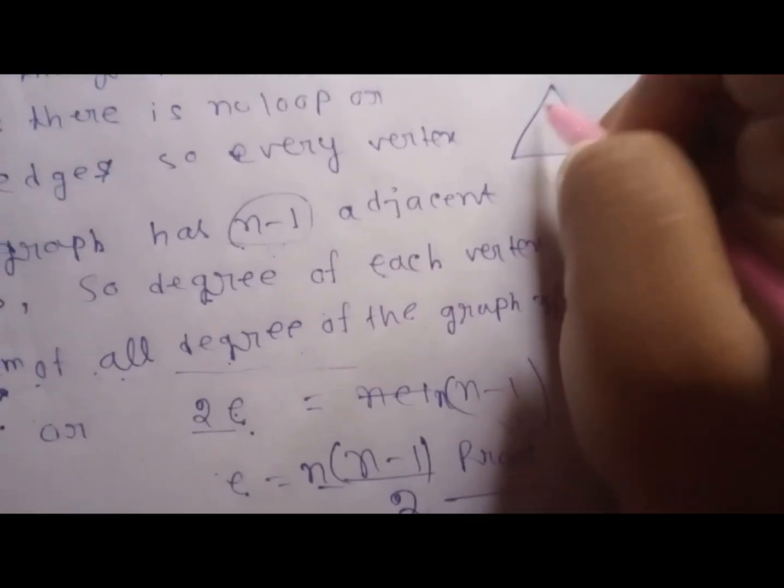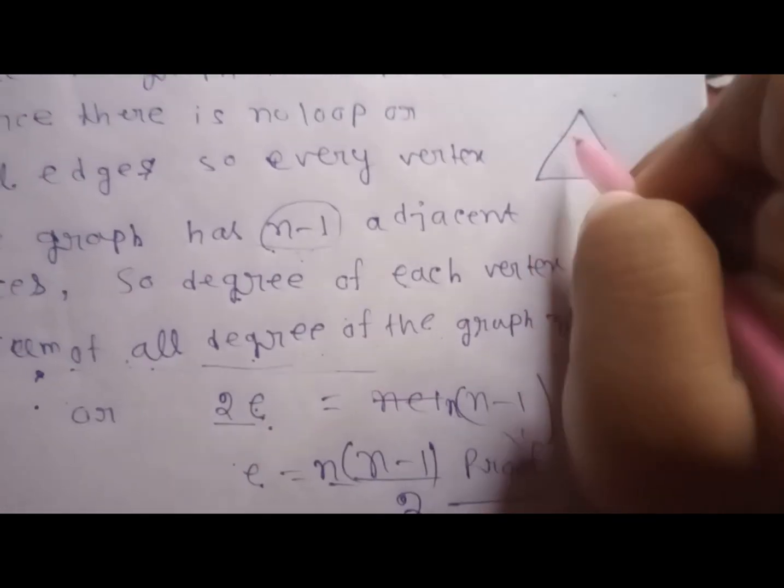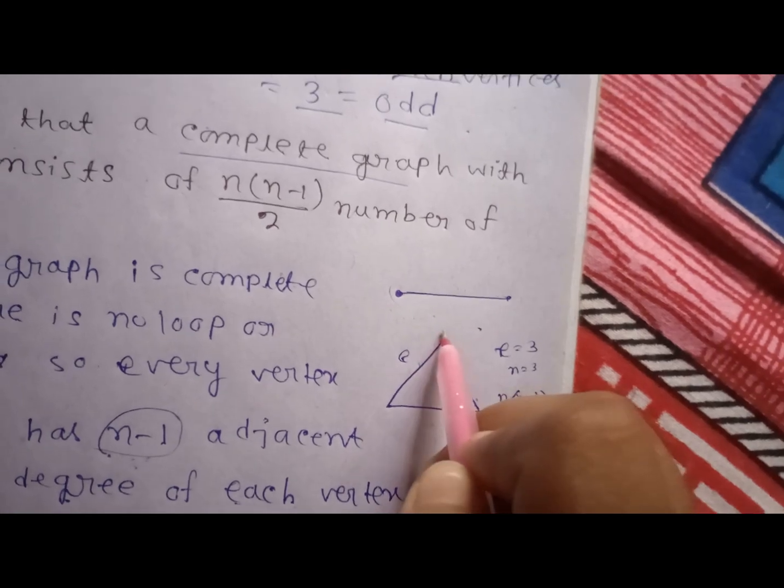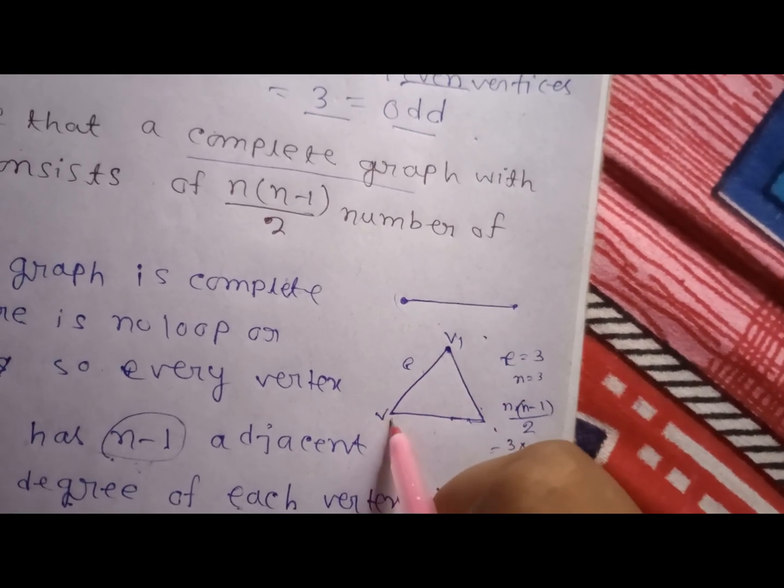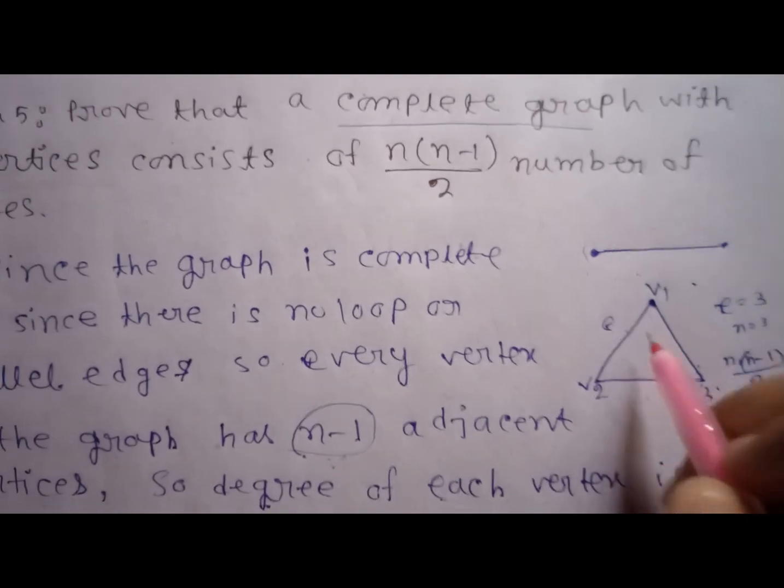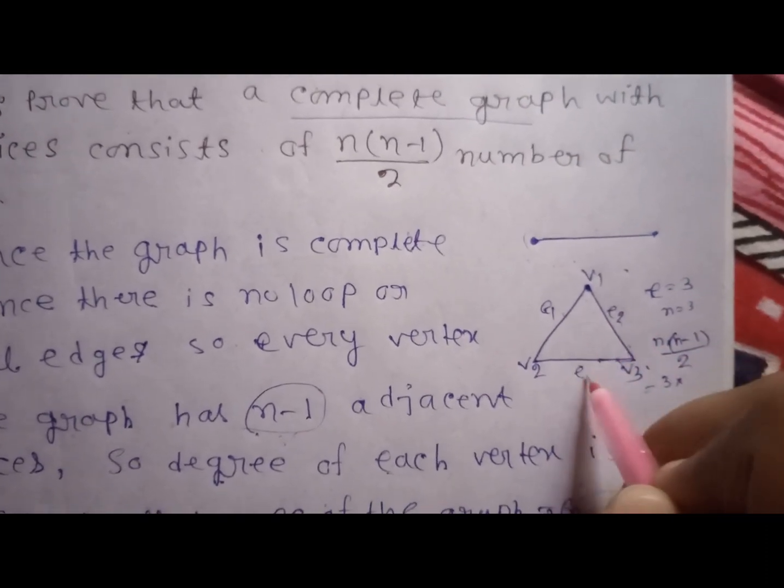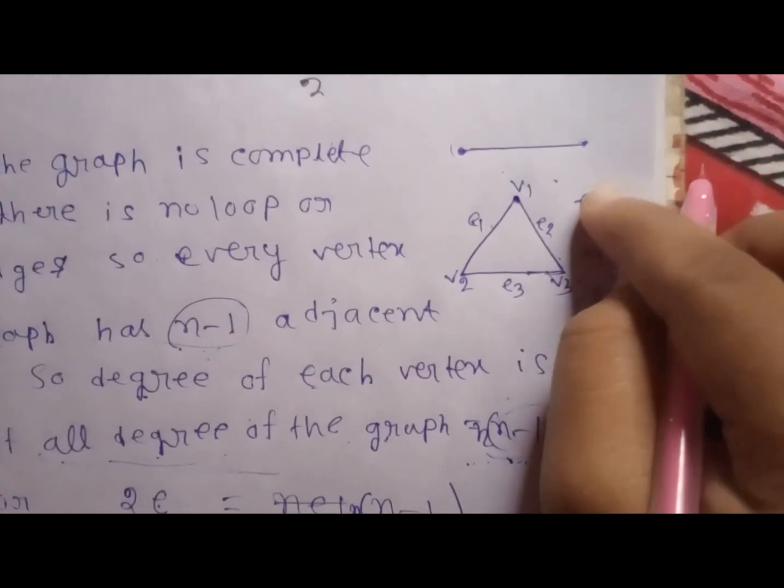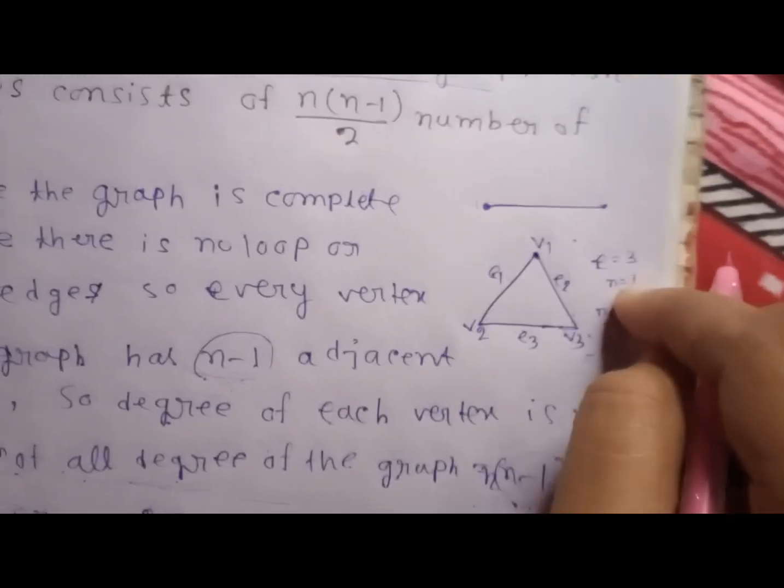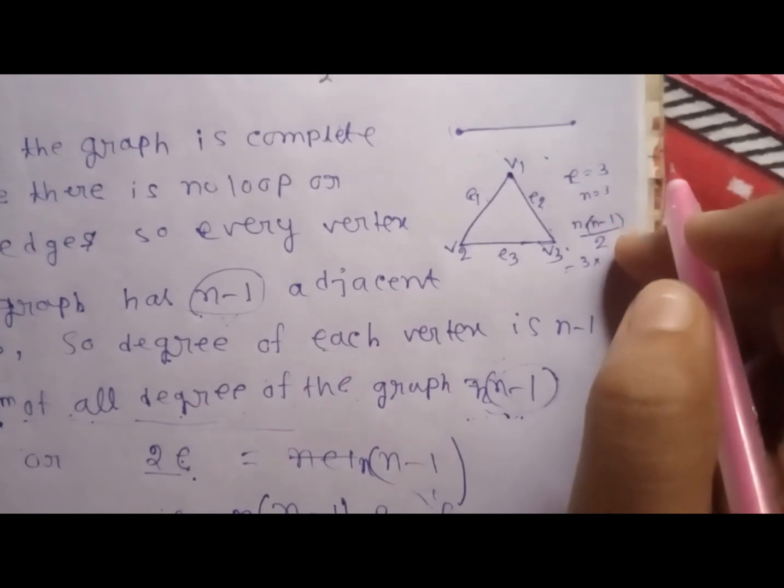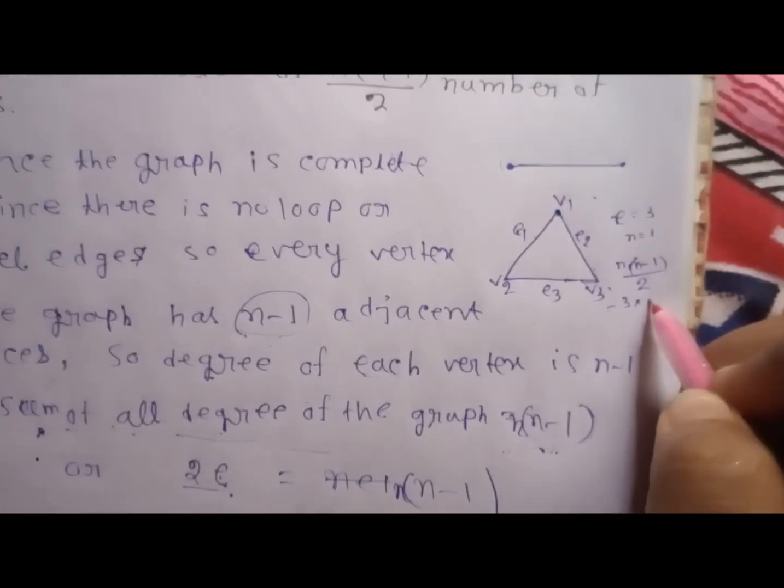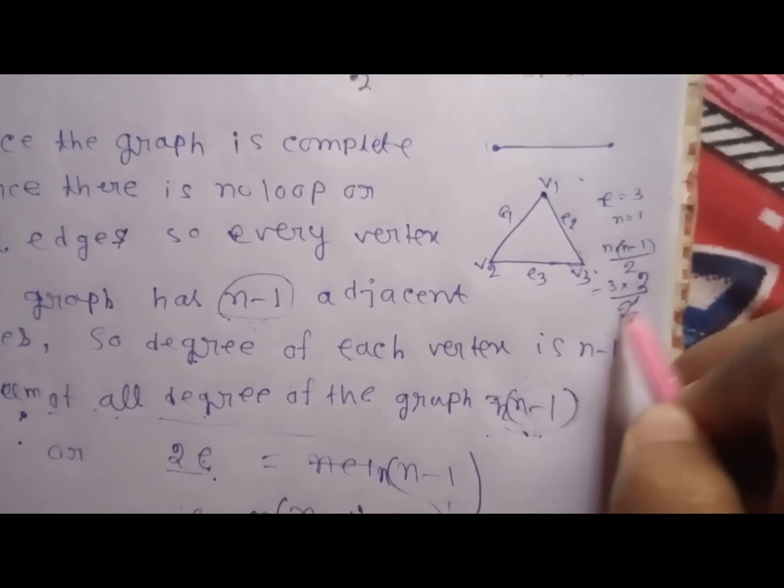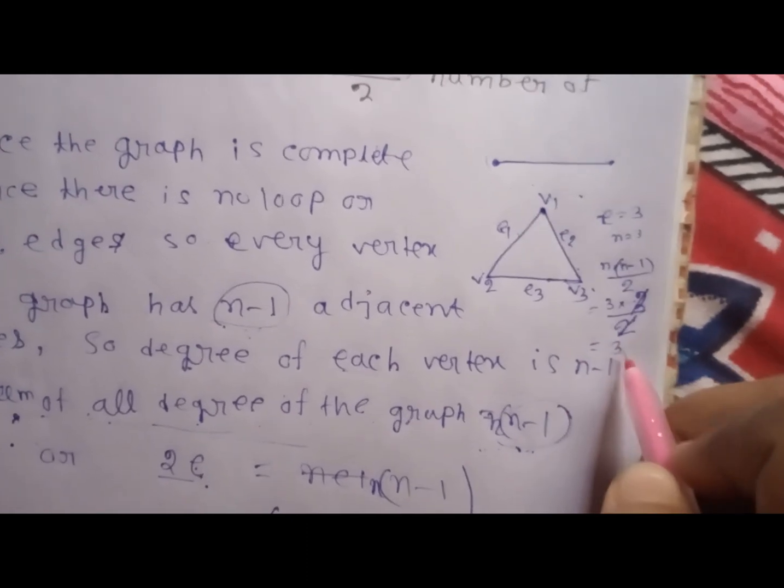So number of edges is equal to 1, 2, 3. There are 3 vertices: v1, v2, and v3. e1, e2, and e3 are 3 edges, so e equals 3 and n equals 3. n into n minus 1 by 2 equals 3 into 3 minus 1 means 2, by 2, which equals 3, which means e.